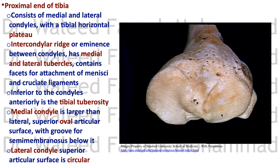Looking at the superior aspect of the tibia — the tibial plateau — the medial condyle is larger and oval in shape, while the lateral condyle is smaller and circular in shape. In the middle there is an intercondylar eminence with medial and lateral tubercles, providing attachment for the menisci and the anterior and posterior cruciate ligaments.